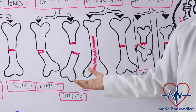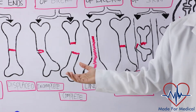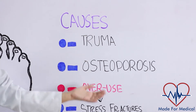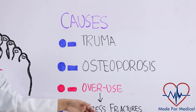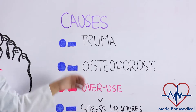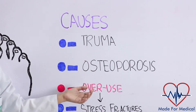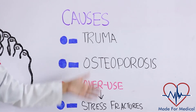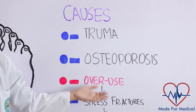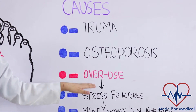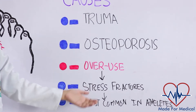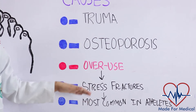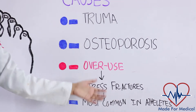But what causes this? Number one is trauma — a fall, a motor vehicle accident, or a tackle during a football game can all result in fractures. Fractures may also be due to osteoporosis, which weakens bones and makes them more likely to break. Another cause is overuse: repetitive motion can tire muscles and place more force on the bone, resulting in stress fractures, which are more common in athletes.